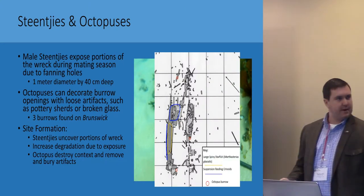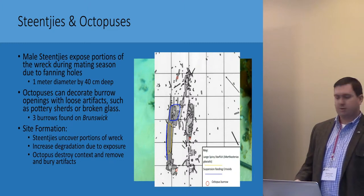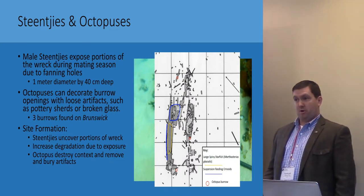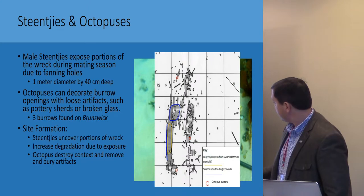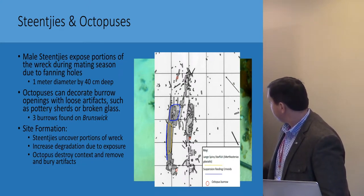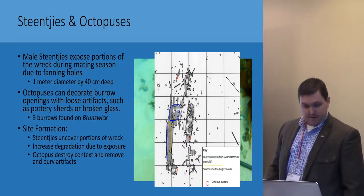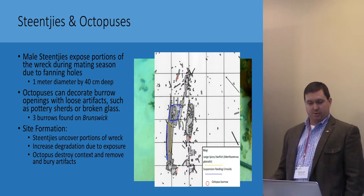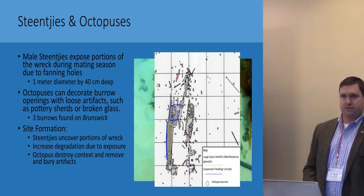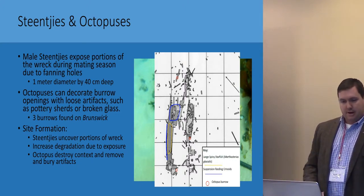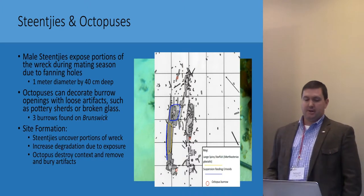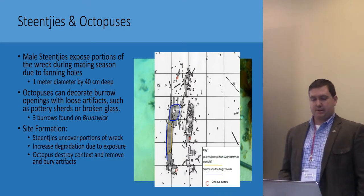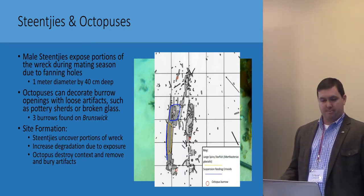In 2012, they found three active octopus burrows located on the wreck. Each one had a few disarticulated artifacts. For site formation, the stingrays uncover portions of the wreck and increase degradation due to exposure, and the octopuses can destroy context and remove and bury artifacts.